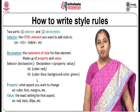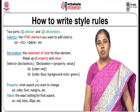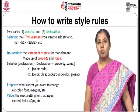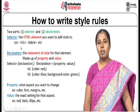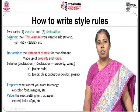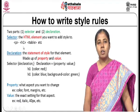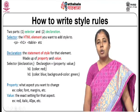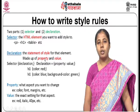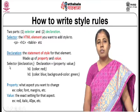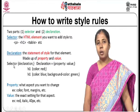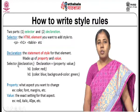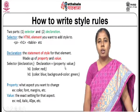When writing style rules, there are two parts: one is the selector and the other is the declaration. The selector is the HTML element to which you want to add a style — for example, p tag, h1 tag, and table tag. The declaration gives the statement of style you want to apply for that element. This declaration is made of two parts: property and value. It is given within curly braces and always ends with a semicolon.